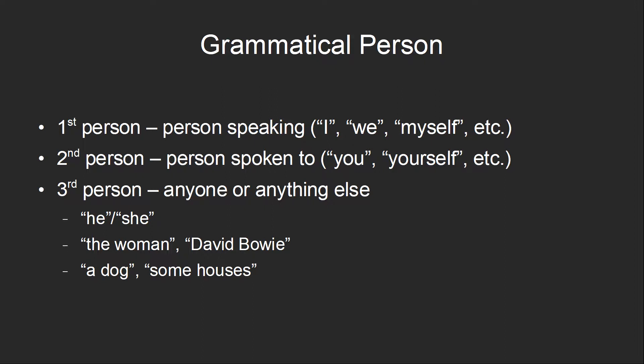The second person is the person who is being spoken to — that's words like 'you' or 'yourself.' And the third person is anyone or anything else: he, she, 'the woman,' 'David Bowie.' Despite the name 'grammatical person,' it doesn't actually have to be a person. It could be an animal or even an inanimate object — for example, a dog, or some houses.